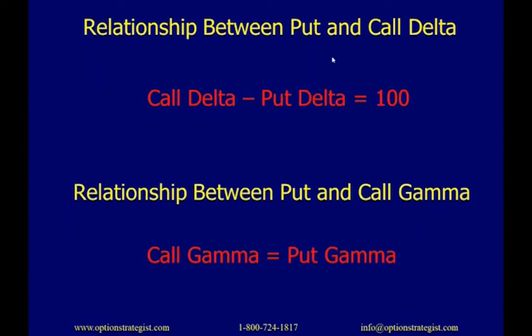Here's a relationship between put and call deltas: the call delta minus the put delta always equals 100, for the same strike and same expiration. So the 50 call minus the 50 put has to equal 100. As for the relationship between put and call gamma — they're equal. You might want to think that through. Feel free to send me an email or call; I like talking to option traders about options.